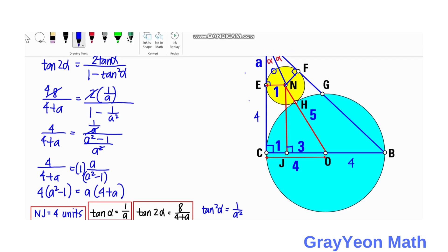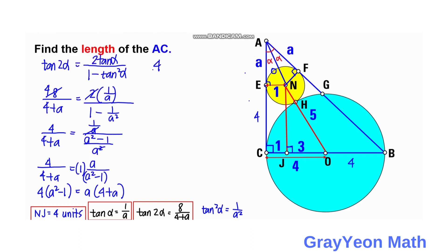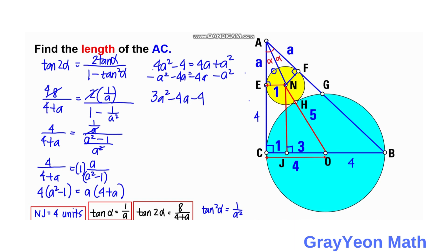Cross-multiplying: 4 times (A squared minus 1) equals A times (4 plus A). Distributing: 4A squared minus 4 equals 4A plus A squared. Subtracting A squared and 4A from both sides gives 3A squared minus 4A minus 4 equals 0.